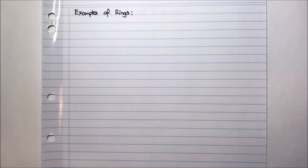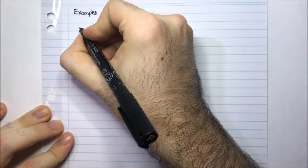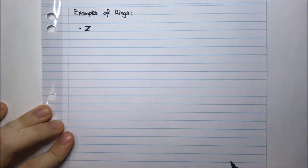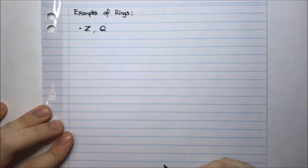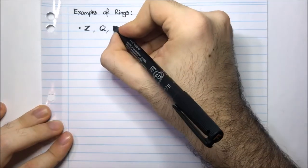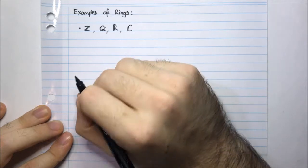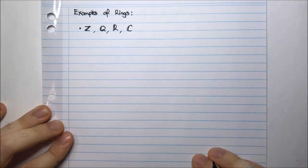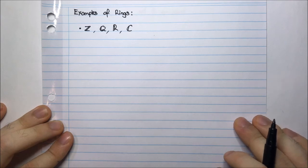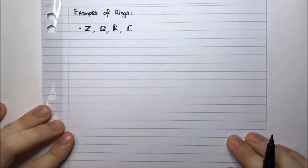Now we'll have a look at a few examples of rings. The first examples are things we're fairly familiar with: the integers, the rational numbers, the real numbers, and the complex numbers are all rings. They may be a bit tedious to prove but easy enough to verify.